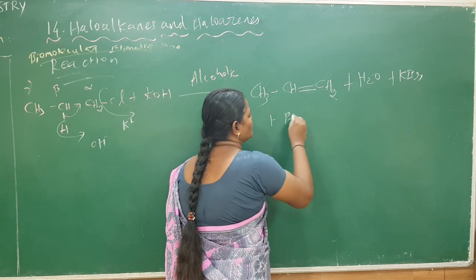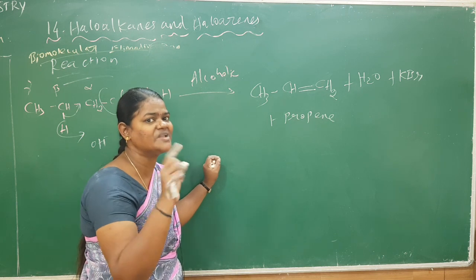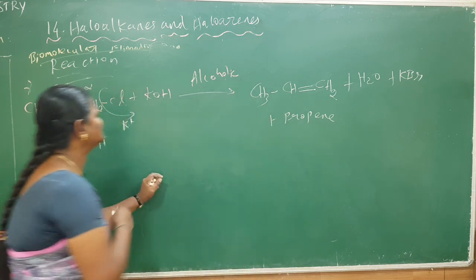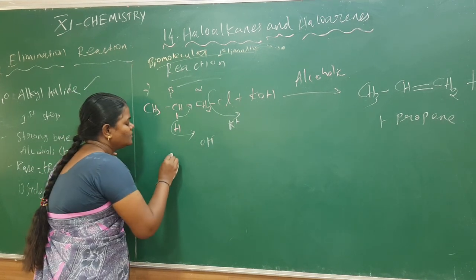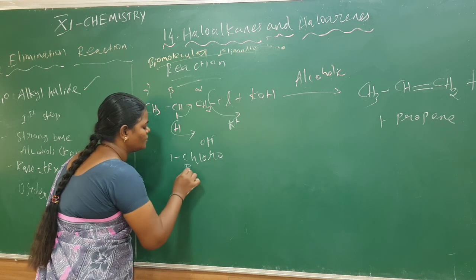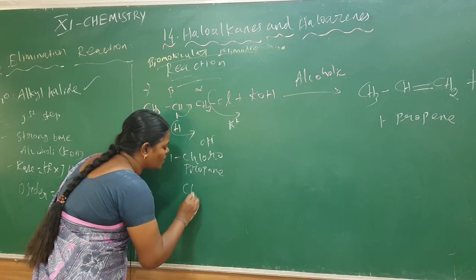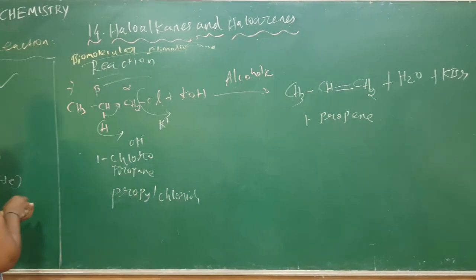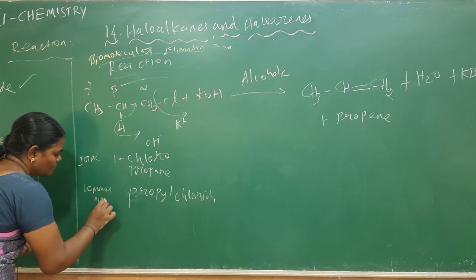In IUPAC name or common name, the product is 1-propene. The total number of carbons is 3, so the root word is prop, with a double bond between C1 and C2, giving us 1-propene as the name of the product. We are taking a primary alkyl halide; the IUPAC name of the starting compound is 1-chloropropane. The common name is propyl chloride.